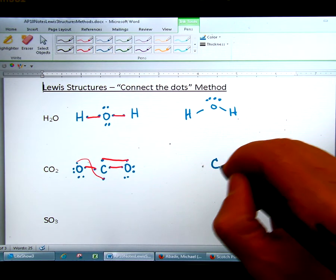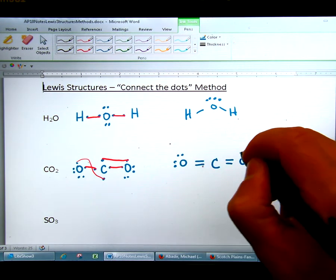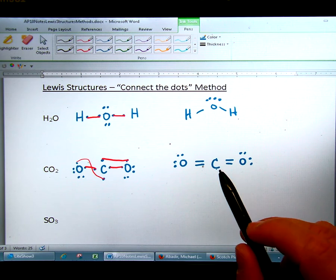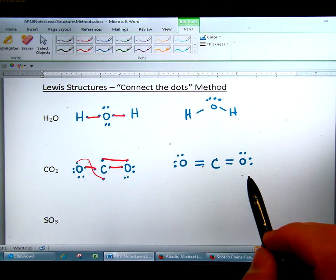And C and O double bond on the left. So when you're all done, you simply can draw this like that. And now carbon has eight electrons around it, and this oxygen has eight electrons around it, and this oxygen has eight electrons around it.